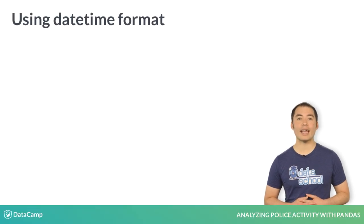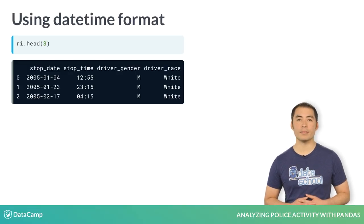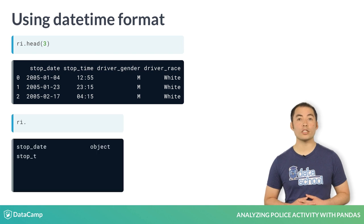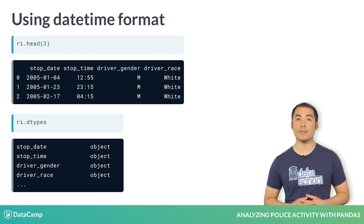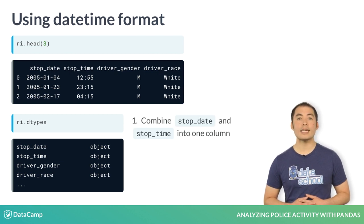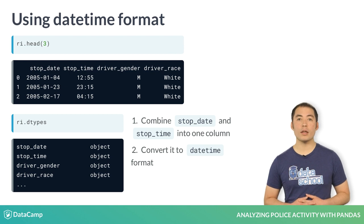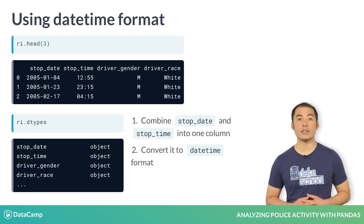Let's take a look at the head of the data set again. As you can see, the date and time of each traffic stop are stored in separate columns, both of which are object columns. Because we'll be using StopDate and StopTime in our analysis, we're going to combine these two columns into a single column and then convert it to pandas DateTime format. This will be beneficial because unlike object columns, DateTime columns provide date-based attributes that will make our analysis easier.